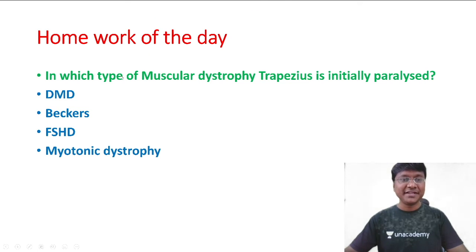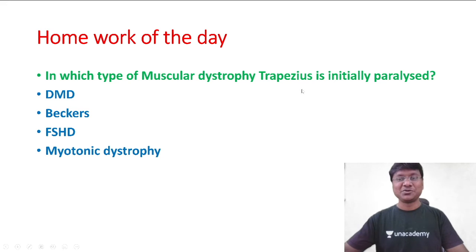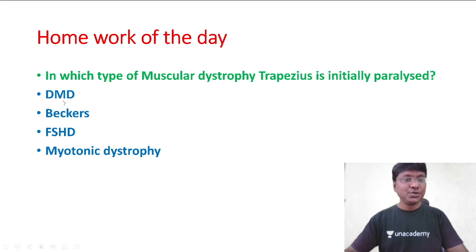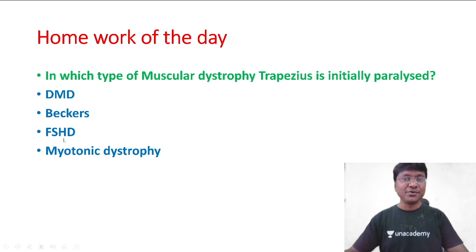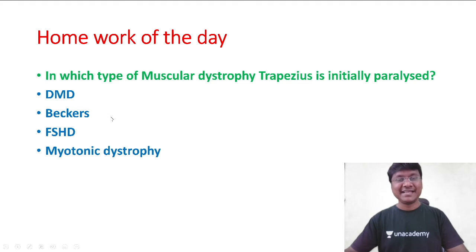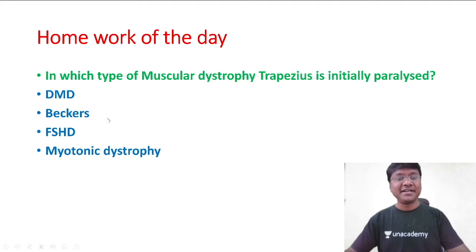The homework of the day: in which type of muscular dystrophy is the trapezius initially paralyzed? The options are Duchenne's muscular dystrophy, Becker's muscular dystrophy, Facioscapulohumeral dystrophy, or Myotonic dystrophy. Please answer in the comment section and I will revert back with the correct answer.